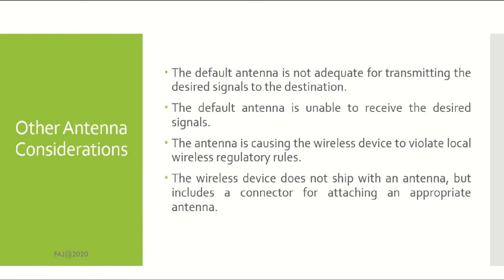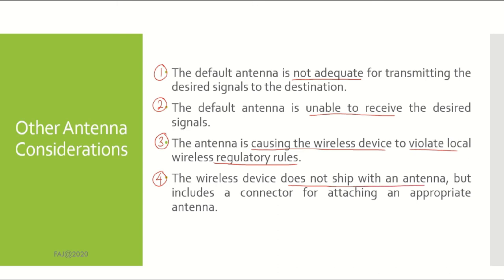Other antenna considerations: First, the default antenna is not adequate for transmitting the desired signals to the destination. Second, the default antenna is unable to receive the desired signals. Third, the antenna is causing the wireless device to violate local wireless regulatory rules. Lastly, the wireless device is not shipped with an antenna but includes a connector for attaching an appropriate antenna. Make sure you make a wise decision before you buy an antenna.